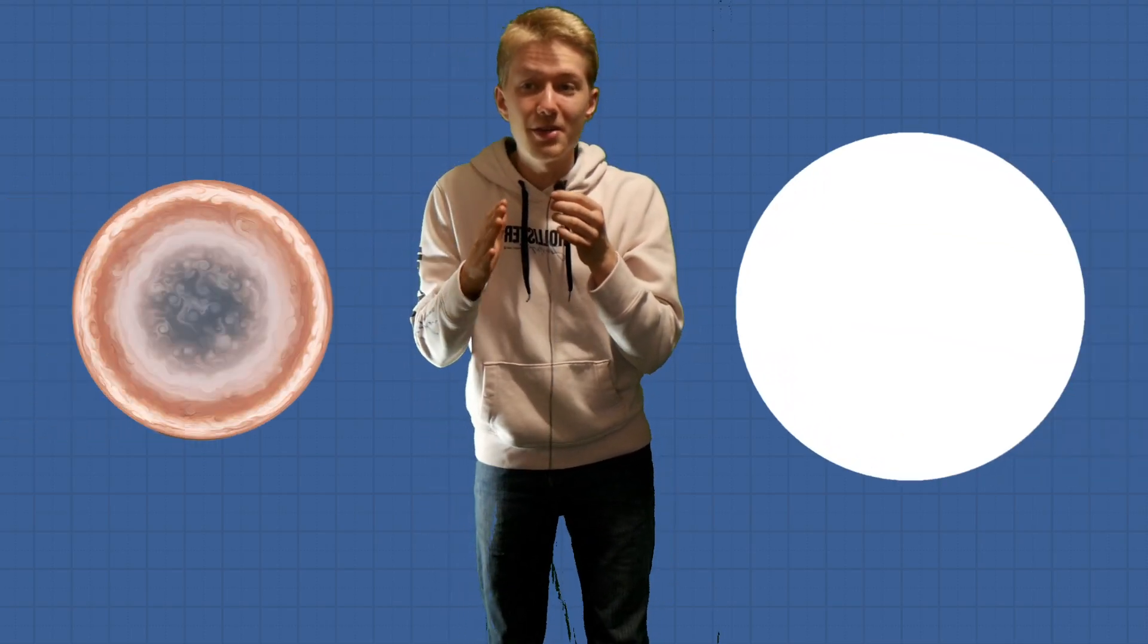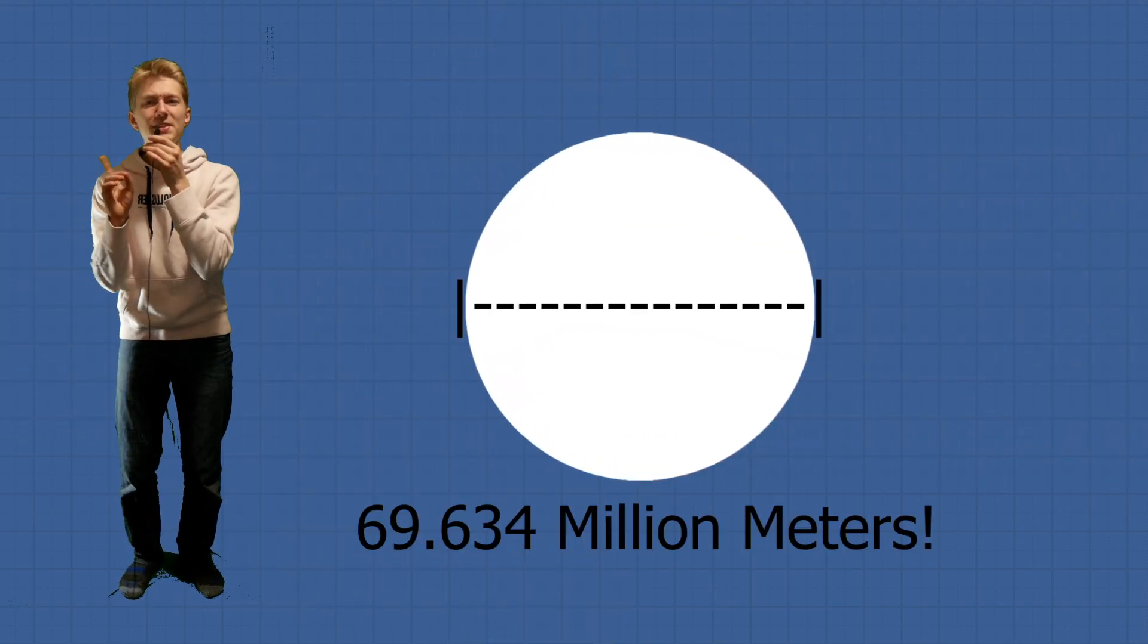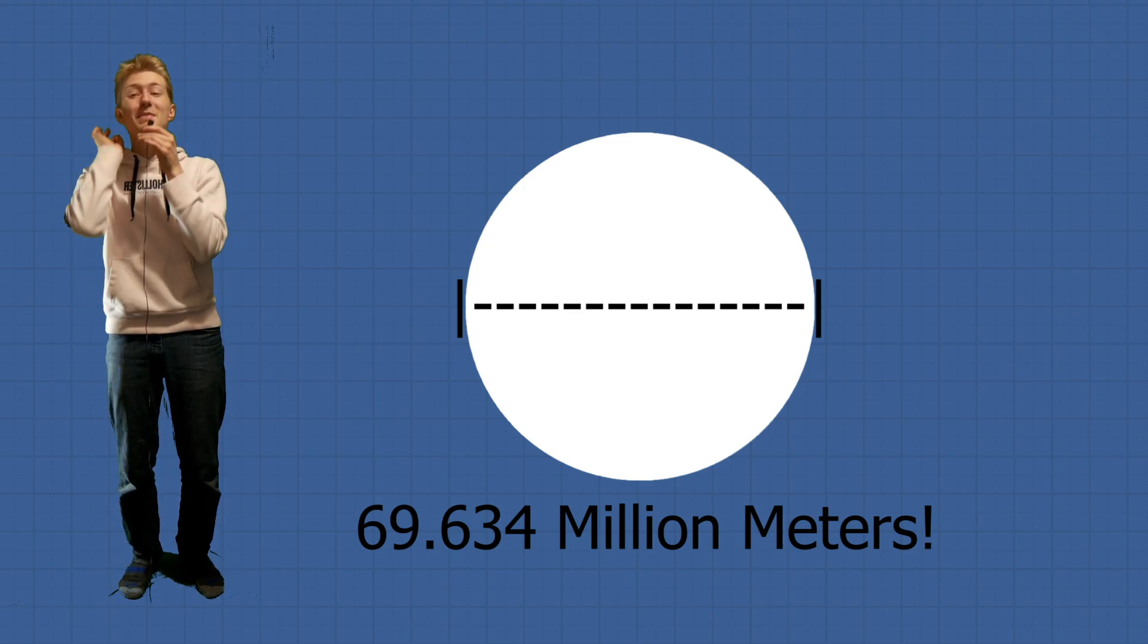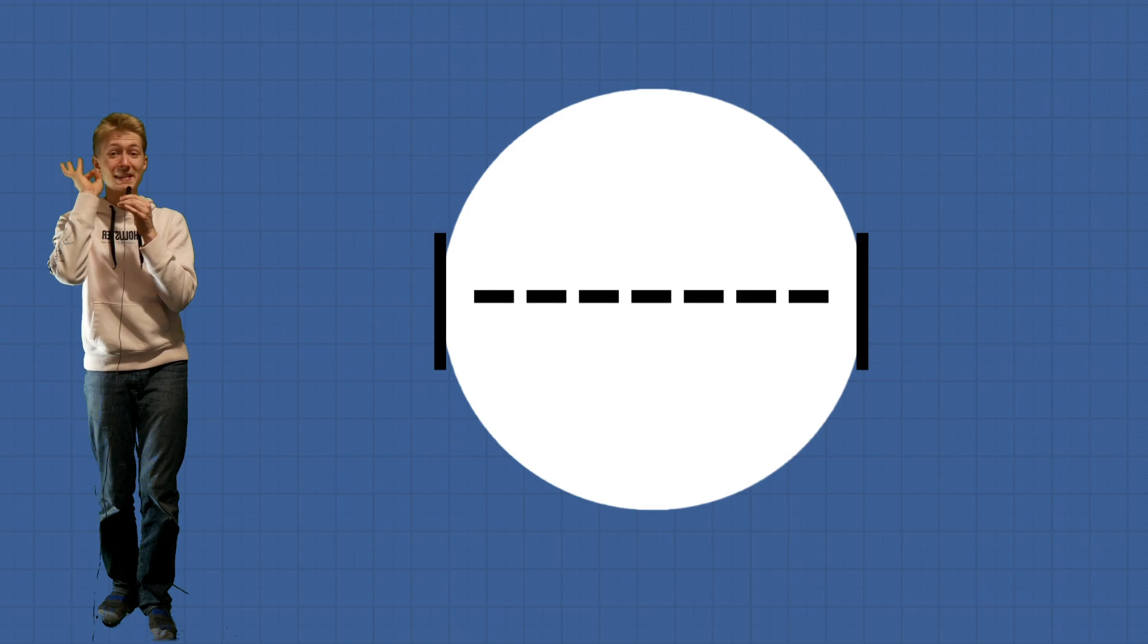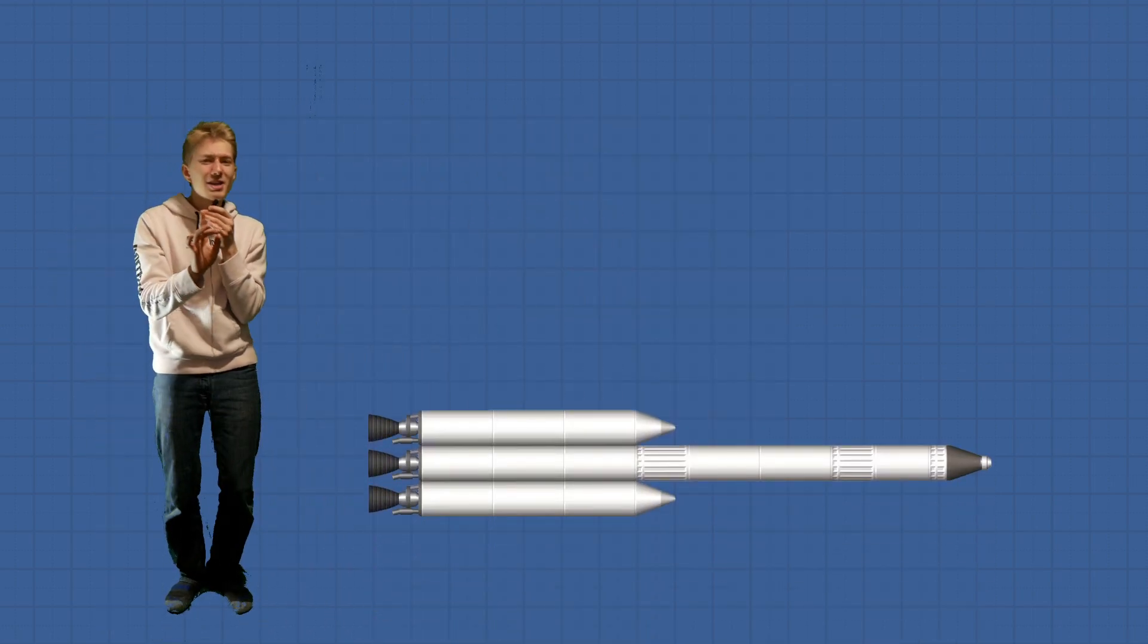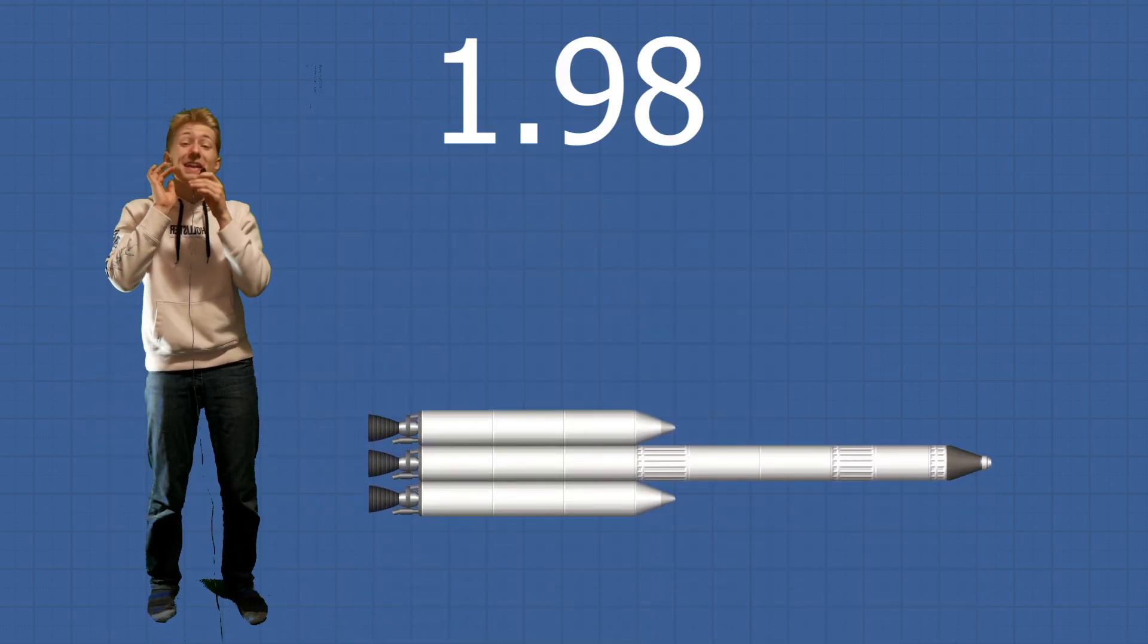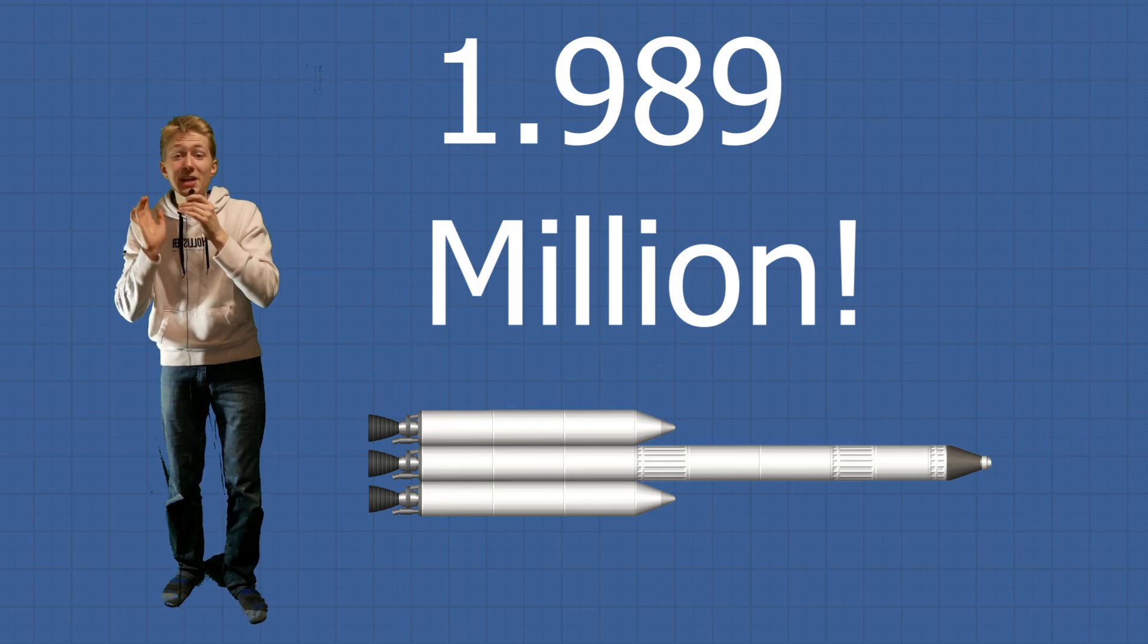But we have one last comparison to make. We still have to compare Jupiter to the size of the Sun. The Sun has a diameter of 69.634 million meters, which takes about 10 Jupiters to span from one side to the other. In three-stage rockets, however, that's 1.989 million three-stage rockets.